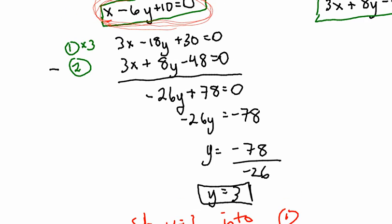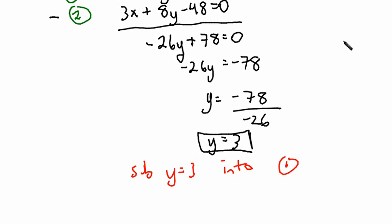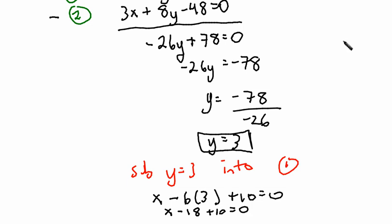So I'm going to sub y equals 3 into equation 1. So it's x minus 6y plus 10 equals 0. So x minus 6y plus 10 equals 0. And then the value of y is 3. So I have x minus 18 plus 10 equals 0. So I have x minus 8 equals 0. And therefore, x equals 8. So the solution to this system is 8 comma 3.